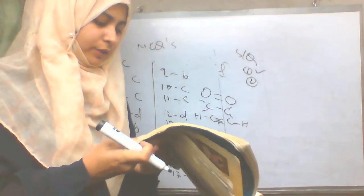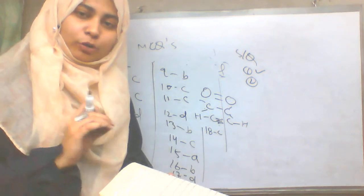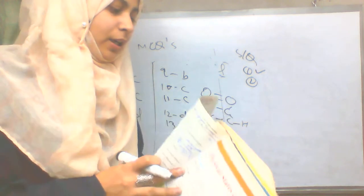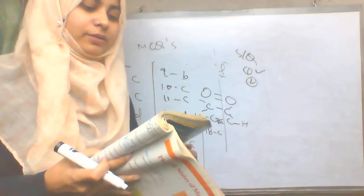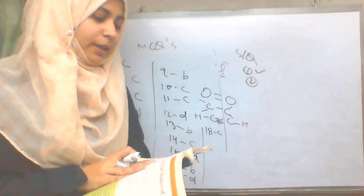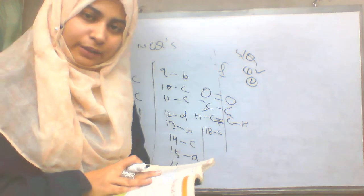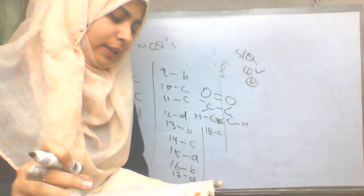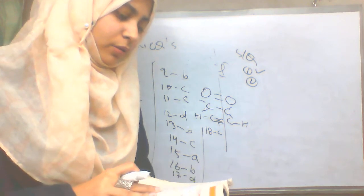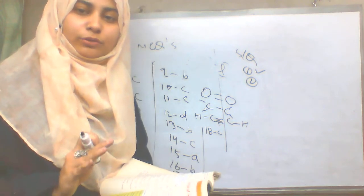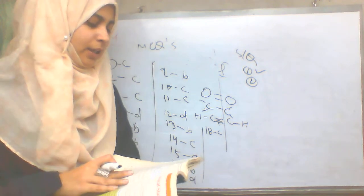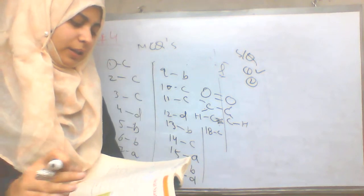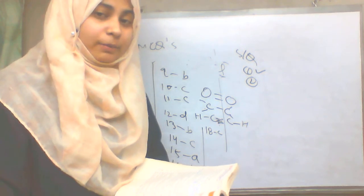A bond pair is the pair of electrons involved in bonding between atoms, while a lone pair is the pair present on an atom but not involved in bonding. Two necessary conditions for the formation of a covalent bond: first, there should be little or no electronegativity difference; second, the bonding atoms must be non-metals. Why does HCl have dipole-dipole forces of attraction? Because of the electronegativity difference between H and Cl.